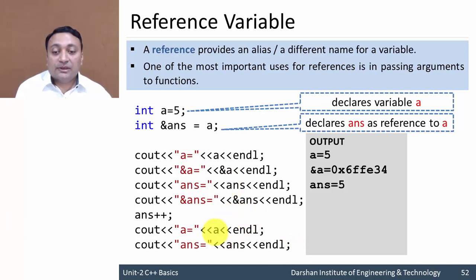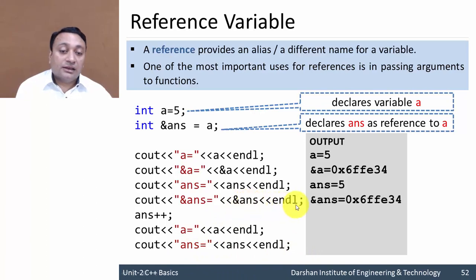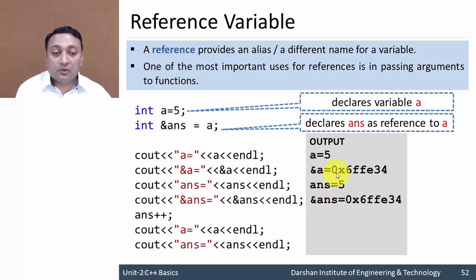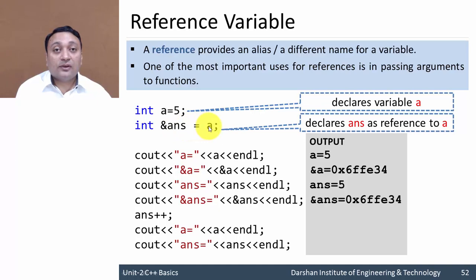If we display the address of 'answer' using the ampersand operator, it will also show the same hexadecimal address. You can observe that the address of 'answer' and the address of 'a' are the same. This means a reference does not allocate a separate memory location like a pointer variable does — 'answer' is just a different name for the same memory location.